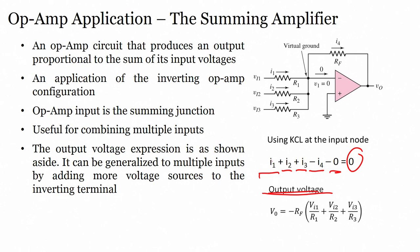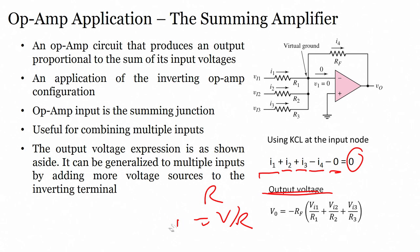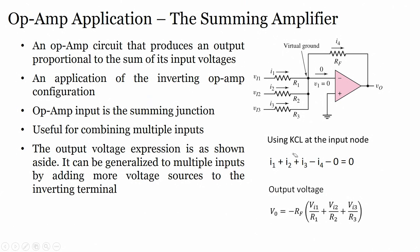For the output voltage, we know V equals IR, so I equals V over R — Ohm's law. Using Ohm's law, instead of I_1 we write V_1 over R_1, I_2 becomes V_2 over R_2, I_3 becomes V_3 over R_3. The output voltage becomes V_out equals minus R_F times the sum of V_1/R_1 plus V_2/R_2 plus V_3/R_3. This is the summing amplifier formula.